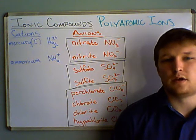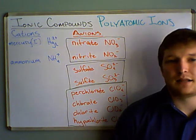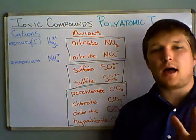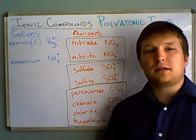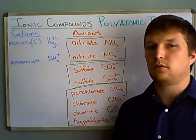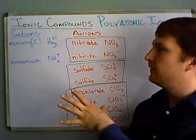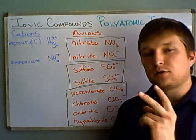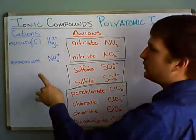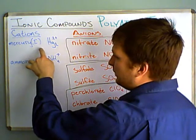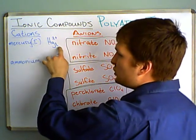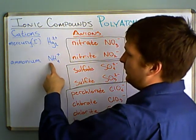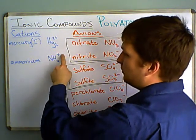There are certain trends with the naming of polyatomic anions that we're going to go over. But first, I want to talk about the polyatomic cations. Now there are more than what I have shown here, but for our purposes in general chemistry we're only going to talk about two specific ones: the mercury(I) cation, which is Hg₂²⁺, and the ammonium ion, which is NH₄⁺.